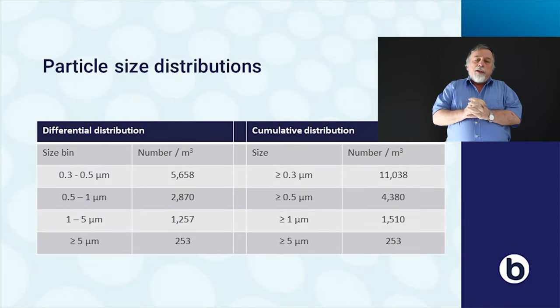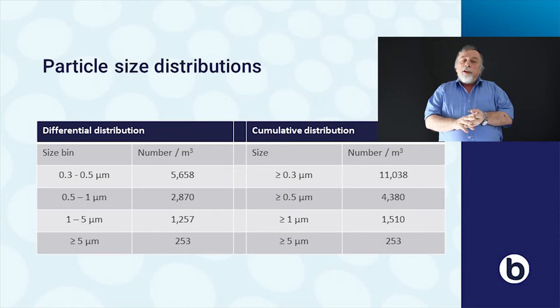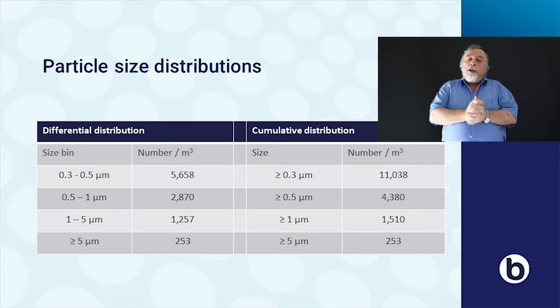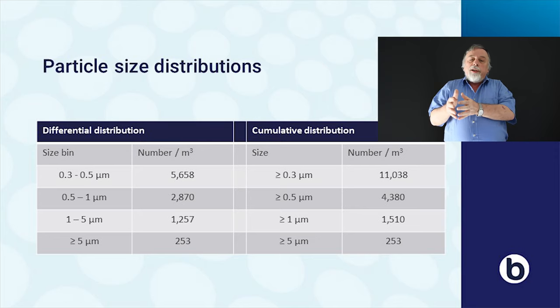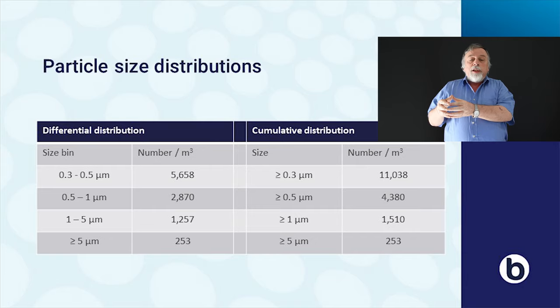In a particle counter you can have more size bins: from A to B, from B to C, from C to D. In the example table, A is at 0.3 micrometers, B at 0.5 micrometers, C at 1 micrometer, and D at 5 micrometers. On the left hand side you see a table with the particle size bins and the number of particles per cubic meter. On the right hand side you can see how we calculate a cumulative distribution by starting with particles larger than 5 micrometers and adding each successive size bin, giving you a particle size distribution which we normally use when talking about air cleanliness.